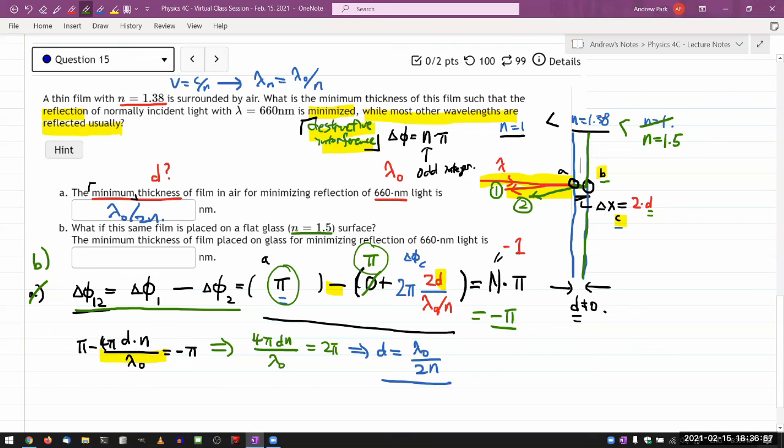The right hand side is still minus π. With that, the corrections are: this π is gone, minus 4πdn/λ₀. Get rid of the minus signs, then you get just π with no two. When you solve for d, it should be d equals λ₀ over, not two, but four. Over 4n. That's the answer for part B.